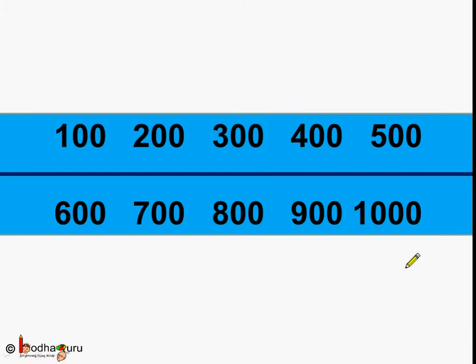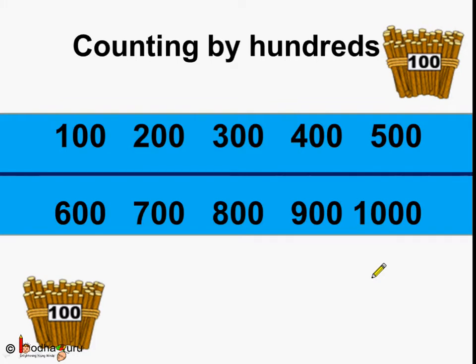So how were we counting? This is called counting by hundreds. So we did counting by hundreds up to 1000.